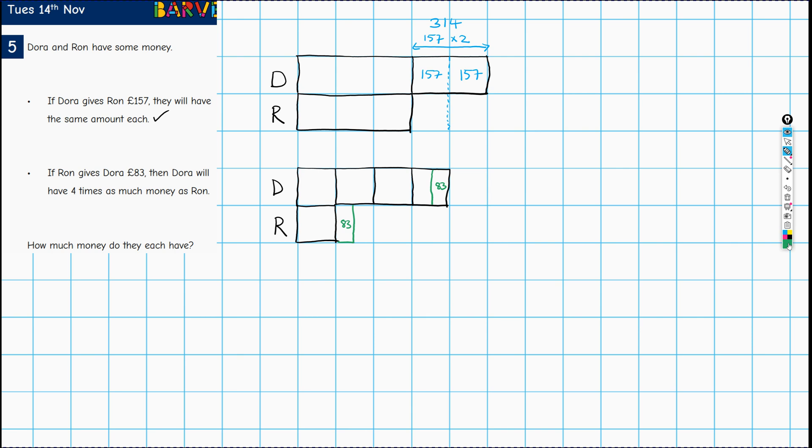Where does that leave us then? Well, what we can do now is draw in what Ron actually has and what Dora actually has. Dora has this amount of money going all the way up to here, not including this 83 pounds. Ron has this amount of money, including the 83 pounds. So this is Ron's money, and this is Dora's money. What else can we fill in now? Well, we found out that the difference between Dora's money and Ron's money is 314. So we can try and fill that in. This is where Ron's money goes up to here. So all the way from there to there is 314.